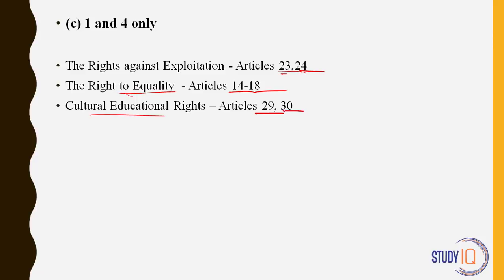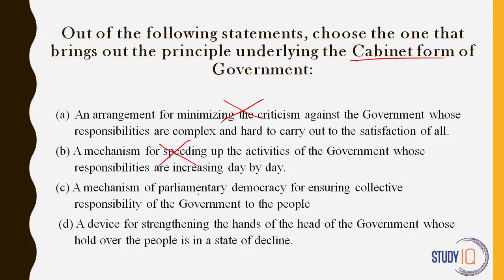Which statement brings out the principle underlying the cabinet form of government? First, arrangement for minimizing criticism against government — wrong. Second, mechanism for speeding up government activities — no, also wrong. Third, mechanism of parliamentary democracy for ensuring collective responsibility of the government to the people — this is right. The cabinet form of government ensures the executive is responsible to the parliament, creating collective responsibility of the government to the parliament. Our answer is C.